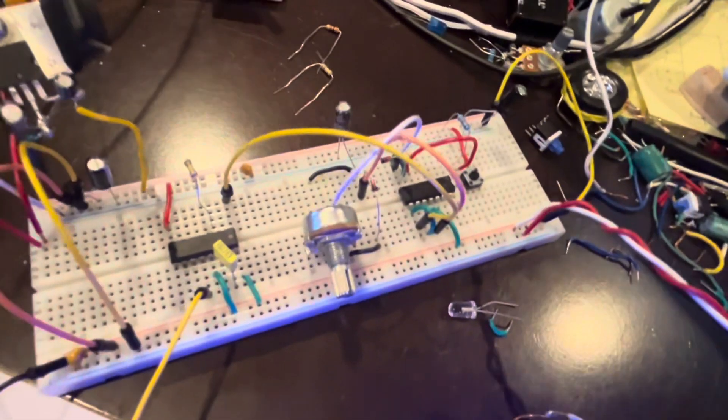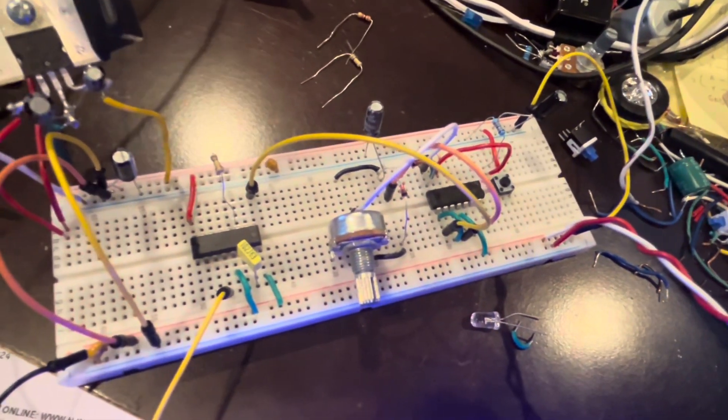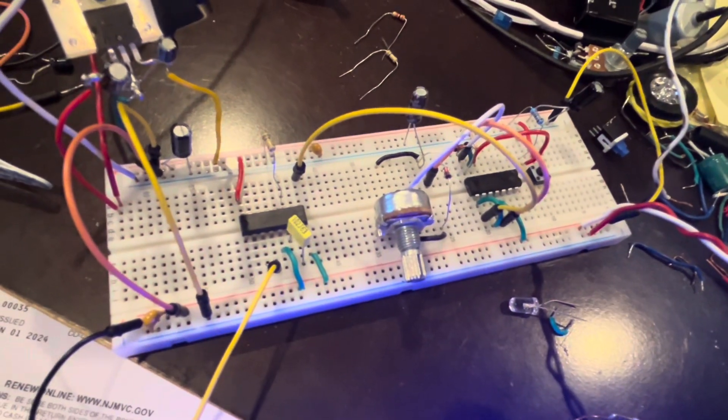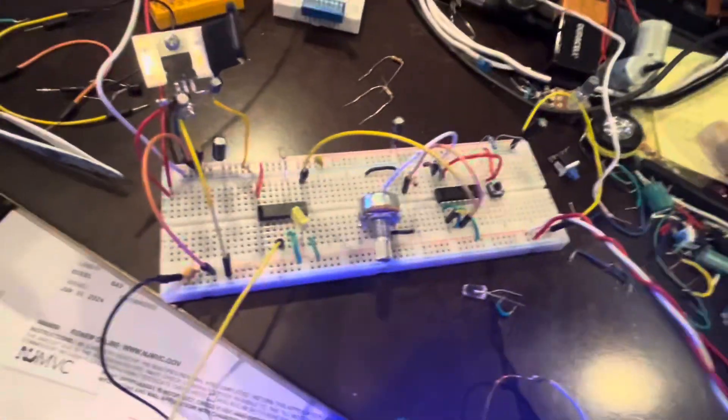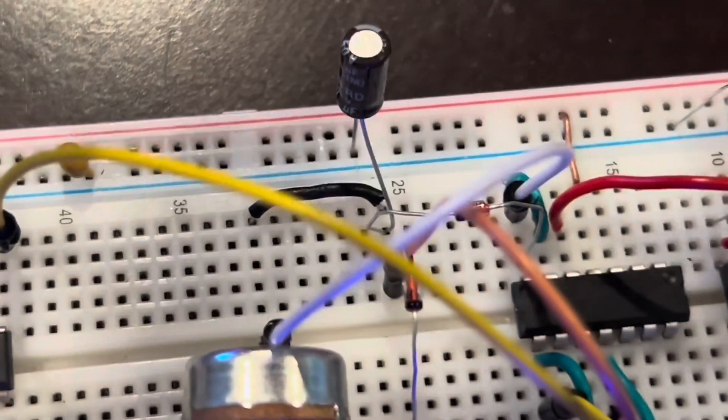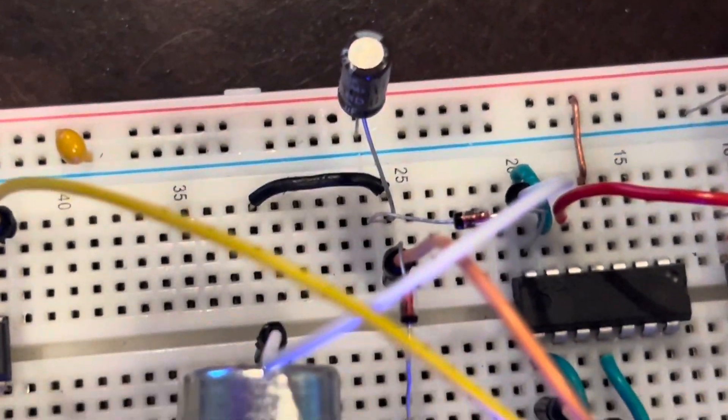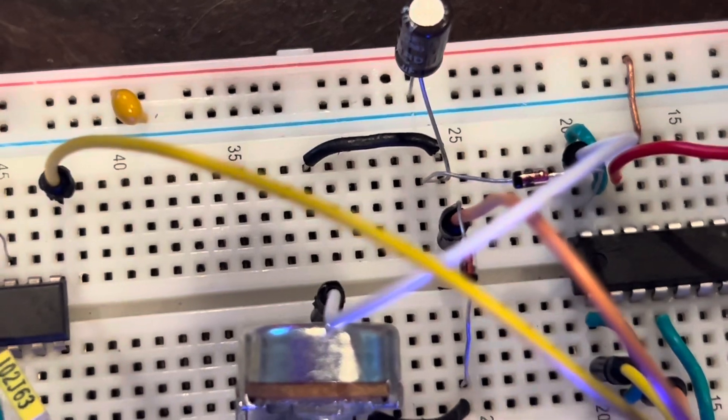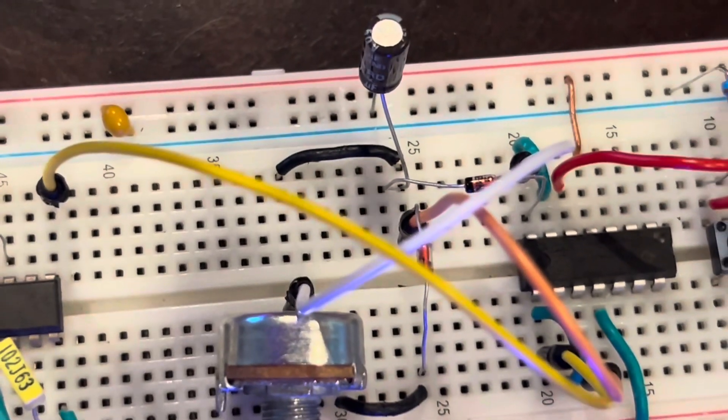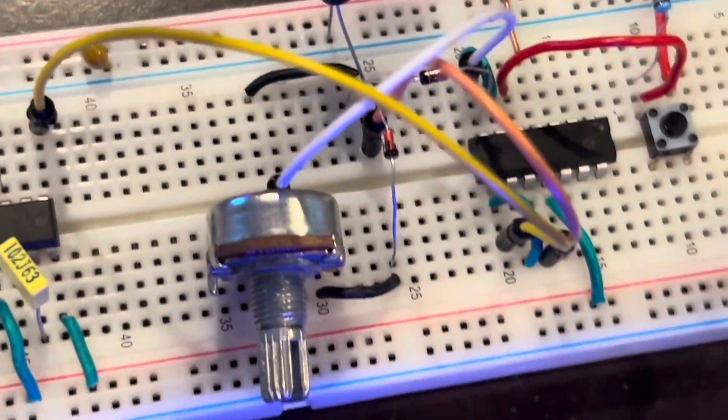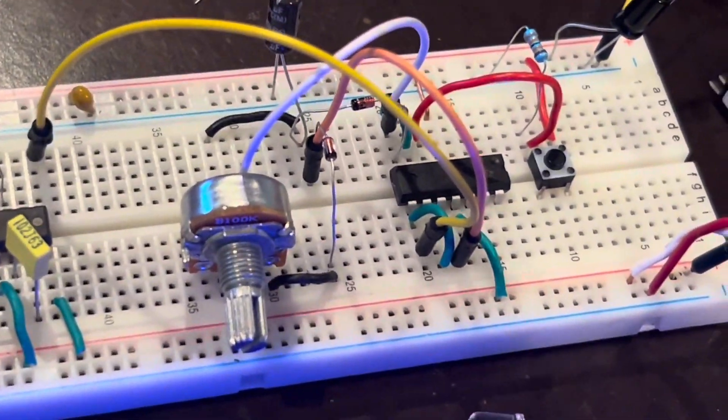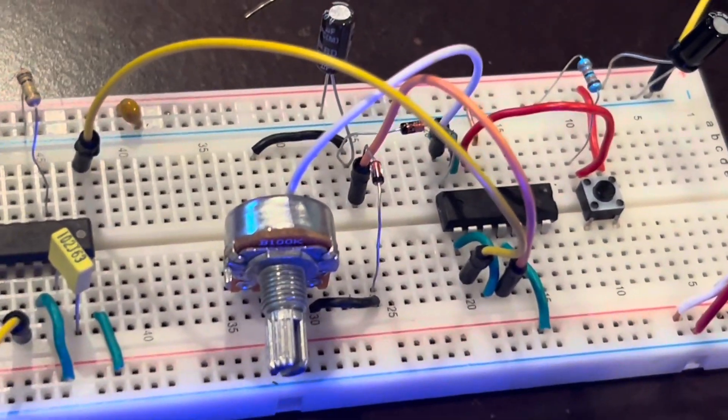And it's a very simple release only, or decay only, envelope generator. Now, if I had put this first diode through another potentiometer, you'd see a change in the attack, or the rise of the envelope. And in this way, you can sort of shape a sound.